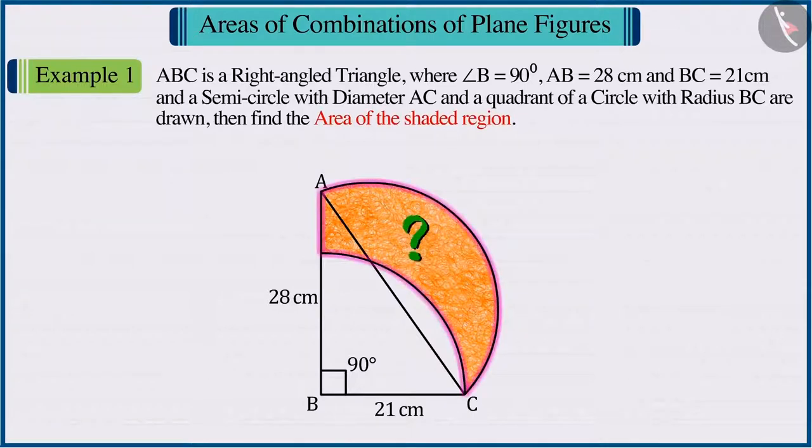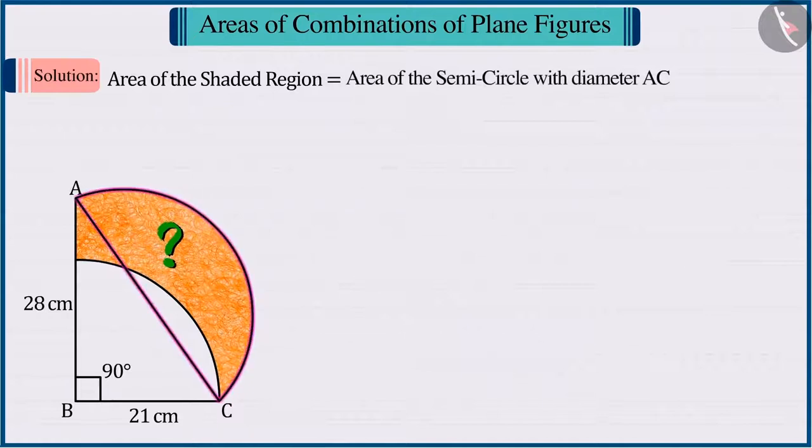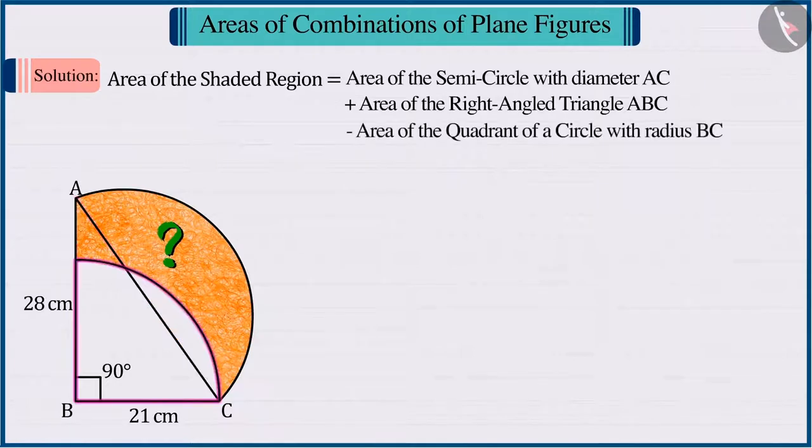Since we have to find the area of the shaded portion, we subtract the area of the quadrant of a circle from the sum of the area of the triangle and the area of the semicircle to get the area of the shaded portion.